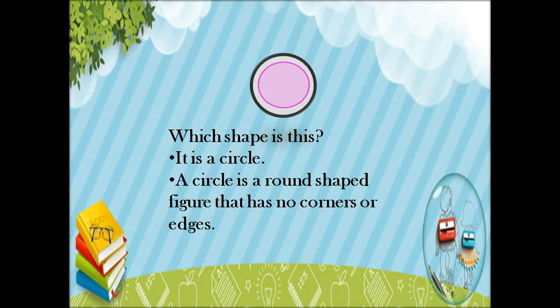Okay, so the last 2D shape is, which shape is this? Very nice, it is a circle. So what is a circle? A circle is a round shaped figure that has no corners or edges. Aise shape jiska koi bhi side ya corner nahi hai. Thik hai?